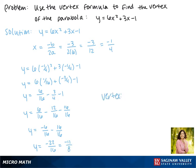This makes the vertex of our parabola the point negative 1 fourth, negative 11 eighths.